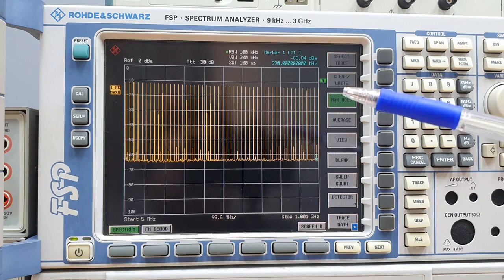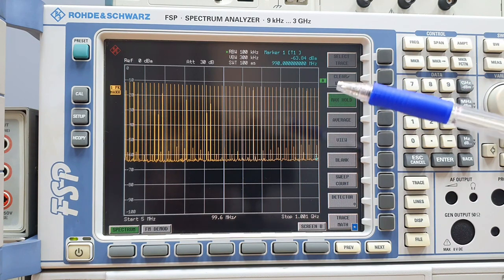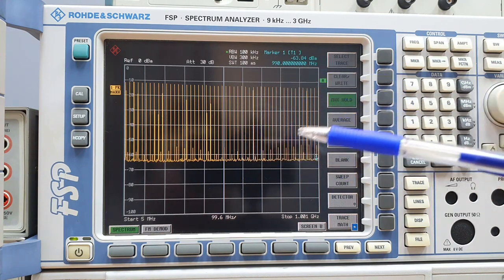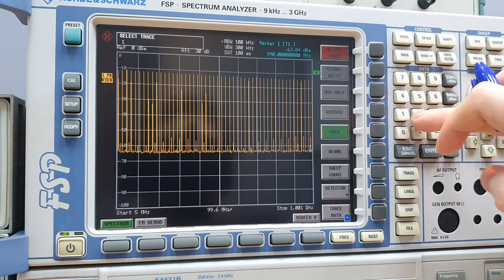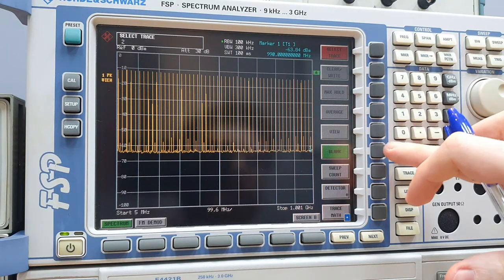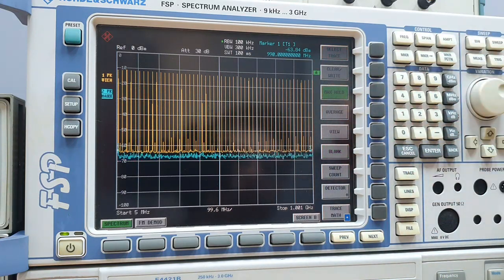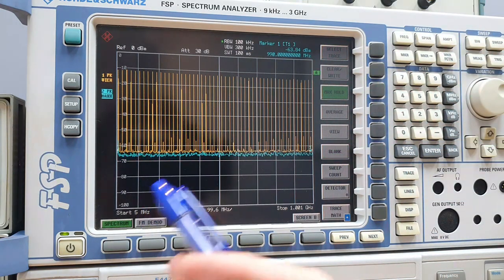But now we're going to see from the isolation perspective and it will be pretty worst here in the higher frequency band. Let's use this second trace here. Trace number two and put this trace at max hold. Okay. So now we have a new trace in the spectrum analyzer and we are going to start a new sweep now. Let's go. Okay.